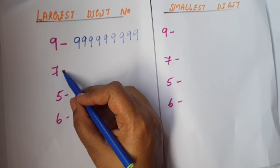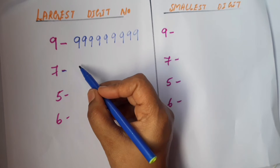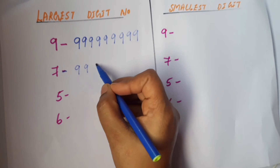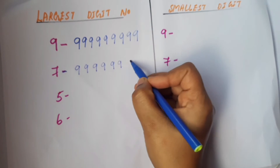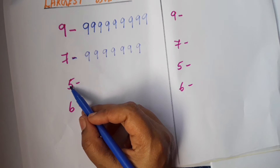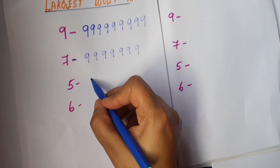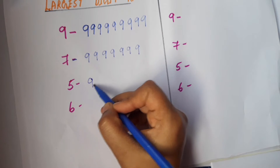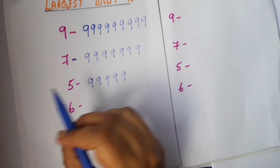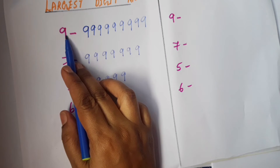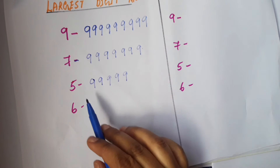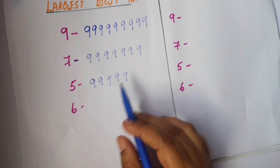To find the largest or greatest seven-digit number, we have to write seven times nine: one, two, three, four, five, six, seven. To find the largest or greatest five-digit number, we have to write nine five times: one, two, three, four, five. So greatest nine-digit number is nine times nine, greatest seven-digit number is seven times nine, greatest five-digit number is five times nine.